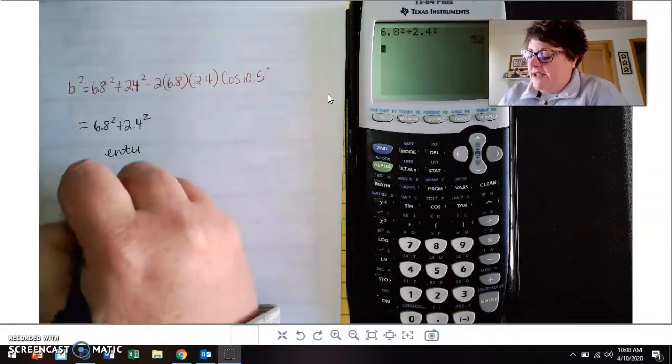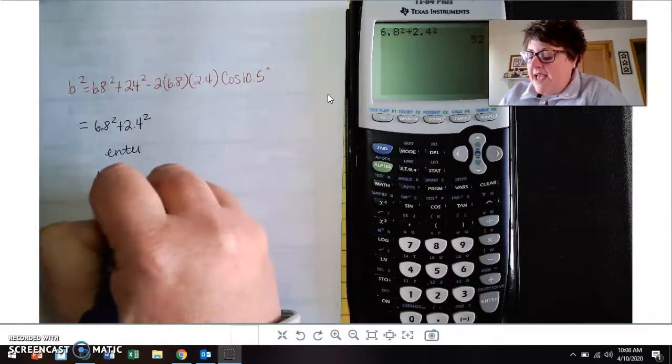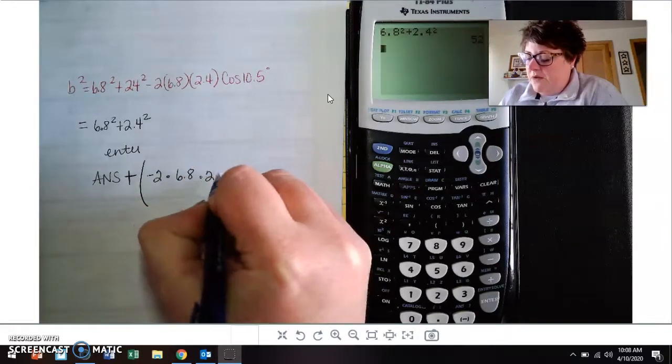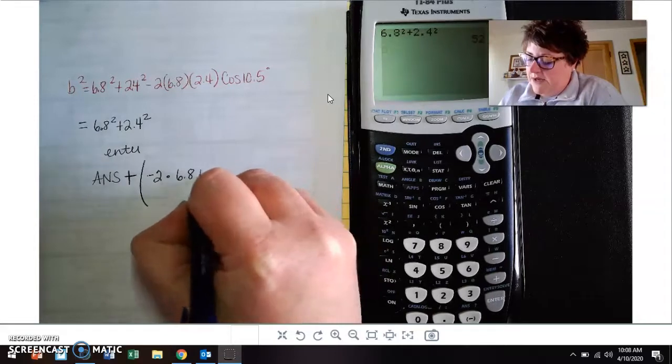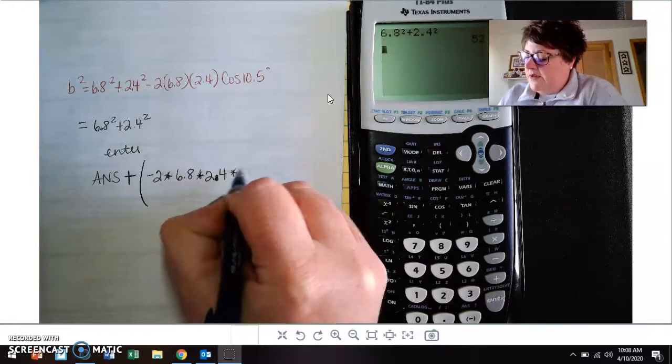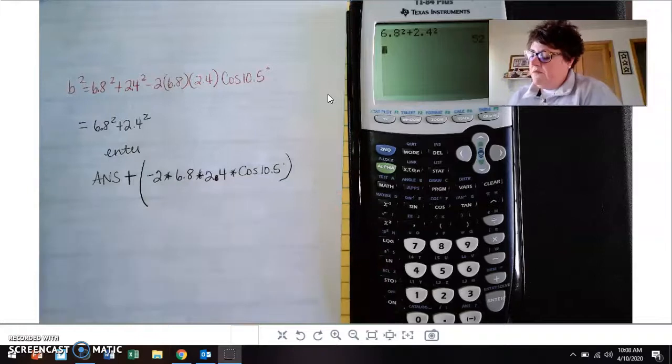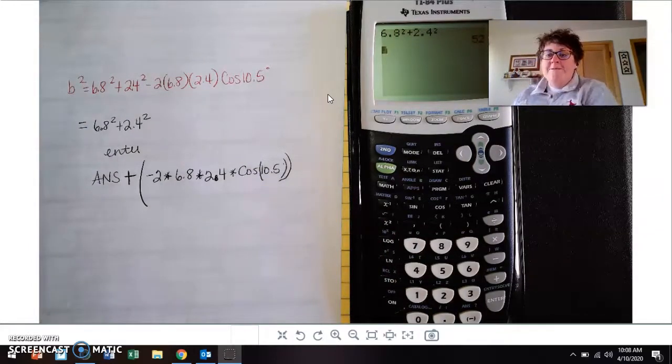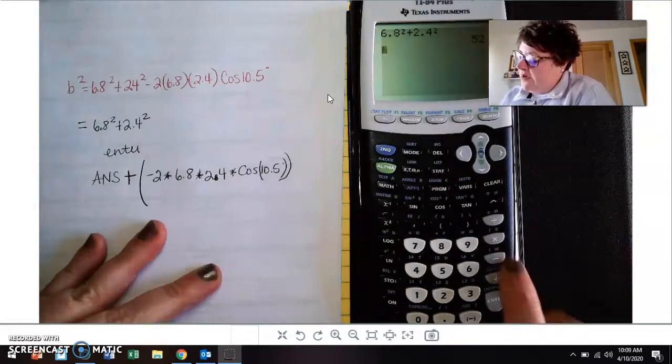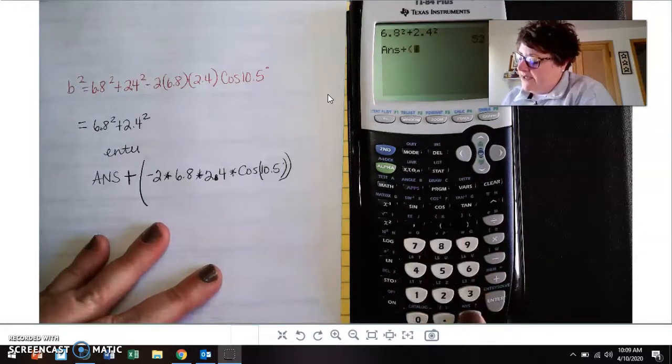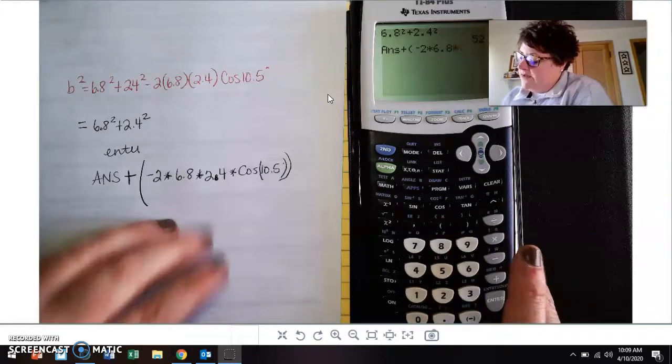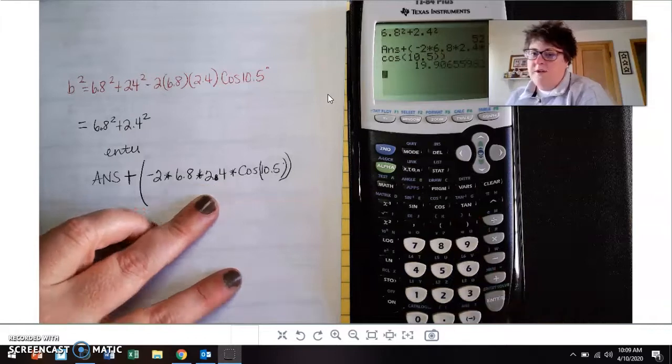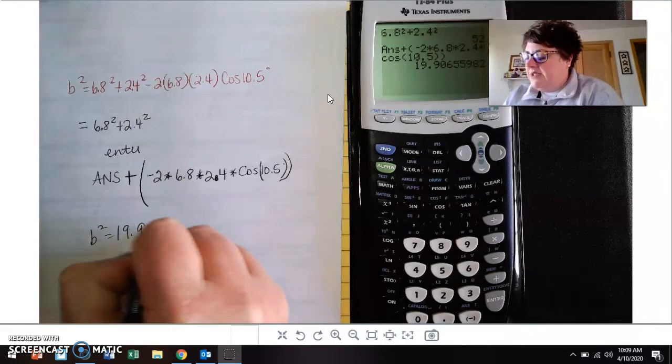And then I have my answer, and then I put a plus sign and open up a set of parentheses. And then I do negative 2 times 6.8 times 2.4, and that's point, not multiplication, and then times the cosine of 10.5. Your cosine is going to open up a set of parentheses maybe on your calculator, so you'll have to close it twice. So I have my 52, so now I want to answer and then add, open up a set of parentheses, negative 2 times 6.8 times 2.4 times the cosine of 10.5, close and close. So you should get then B squared is the 19.906 something.